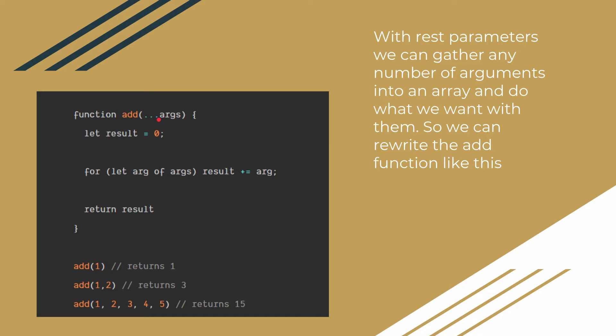During the first function call, 1 is stored at index 0 of the args array. In the second function call, 1 and 2 are passed, so 1 is stored at index 0 and 2 is stored at index 1 of the args array. In the third function call we are passing 5 parameters, so all 5 will be stored as array elements of args. Basically, what the rest parameter is doing here is packing a number of elements into an array.